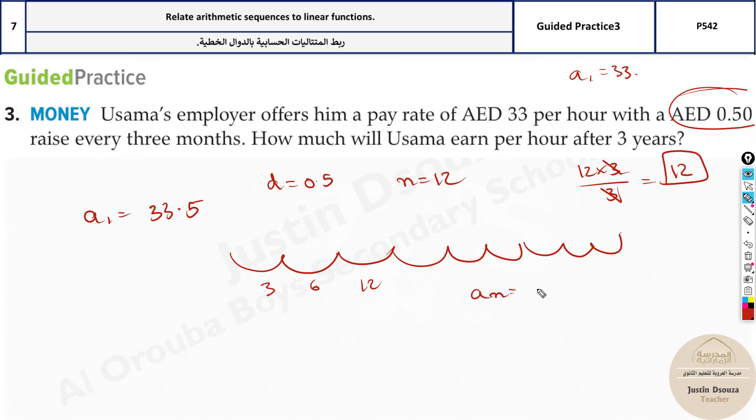So an equals a1 plus n minus 1 times d. Now substitute a12. That means after 3 years, it will be 33.5. N is again 12. This is what we are solving for, minus 1 times d is 0.5.